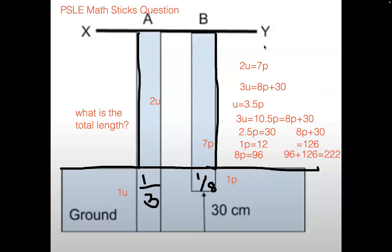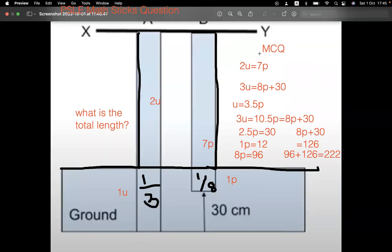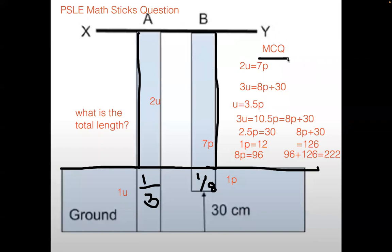It's actually an MCQ question, so they actually gave you the options. Be careful to select the option and shade the oval on the OAS corresponding to the option. I think that 222 was actually option three or option four. I'm not really quite clear myself even though I took the PSLE.